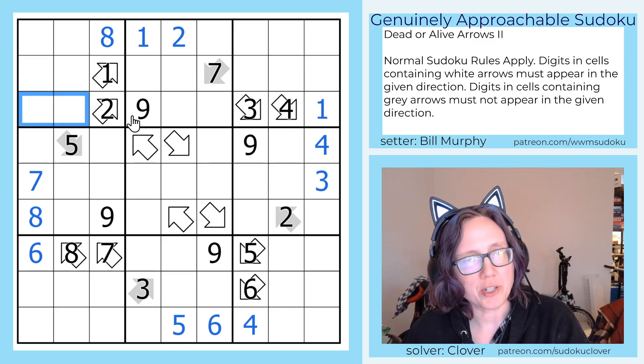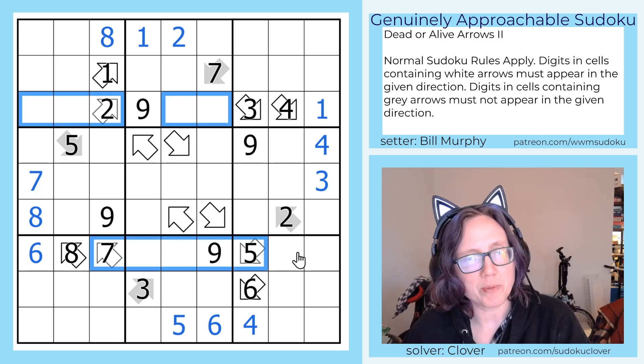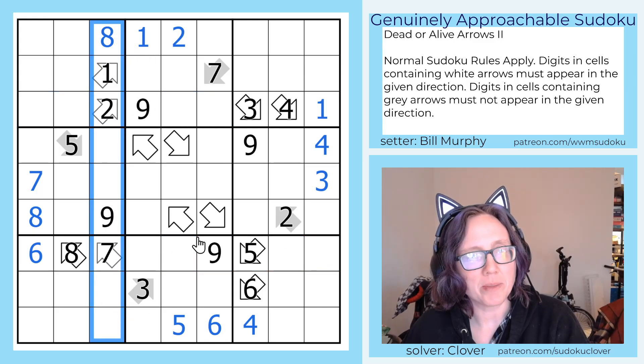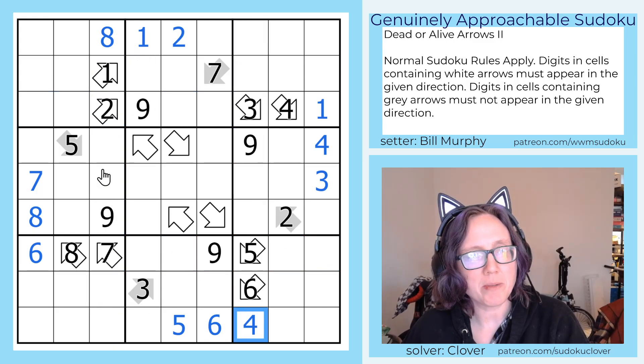Now we're going to turn our attention to these rows, row 3 and row 7, and columns 3 and 7 as well. Let's see what we can do with these.